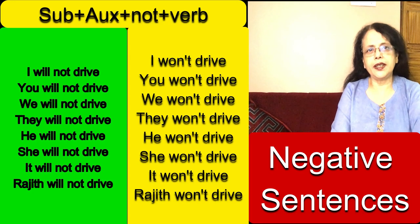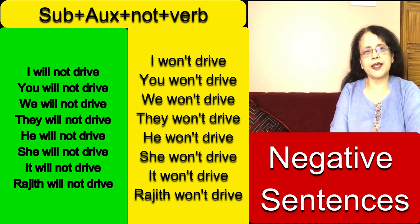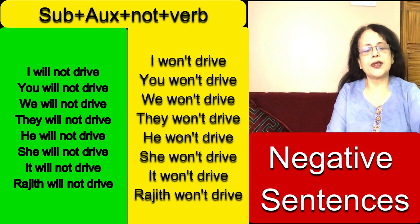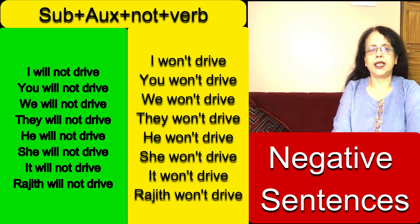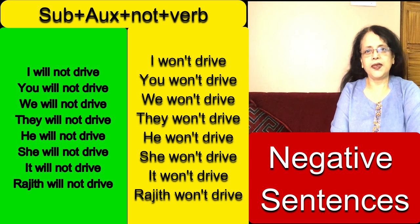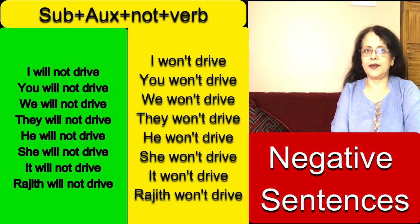Let's see how to make negative sentences and also their contractions. The structure is subject plus will plus not plus base form of the verb. I will not drive — contraction: I won't drive. The short form of will not is won't. You will not drive / you won't drive. We will not drive / we won't drive. They will not drive / they won't drive. He will not drive / he won't drive. She will not drive / she won't drive.